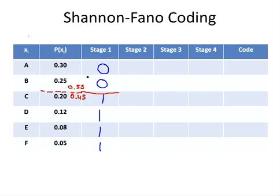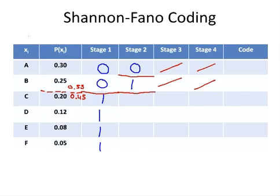Each stage goes like that. In this next phase, we have A and B. There's only one way we can partition A and B, because there's only two symbols left — so, 0 and 1. We're finished with A, because there's no way we can partition it anymore. The code for A is 0 and 0. The code for B is 0 and 1, because that's it finished now.